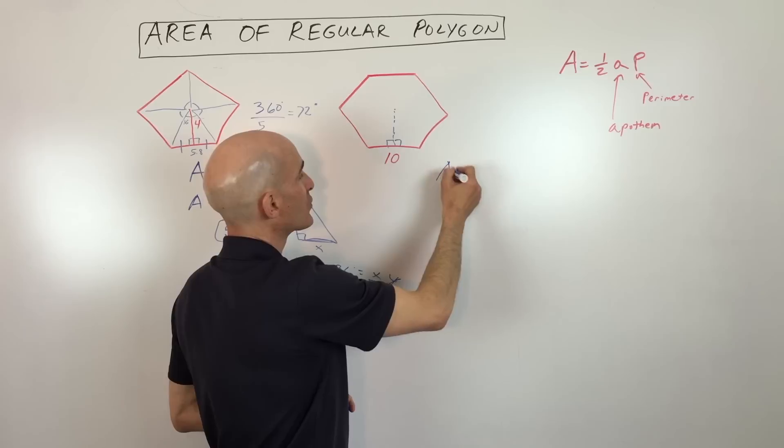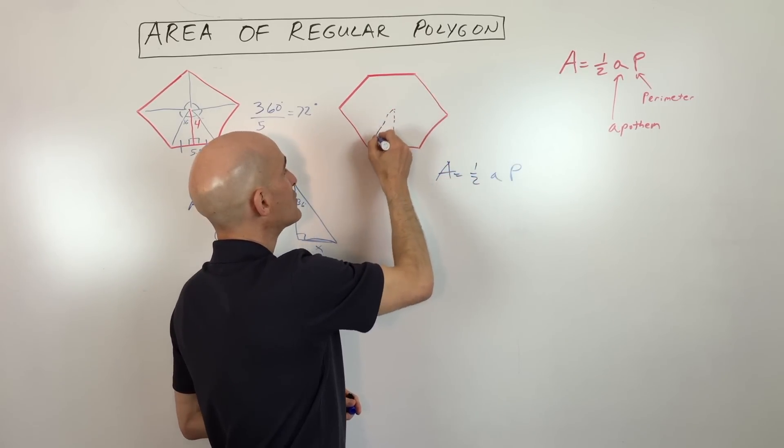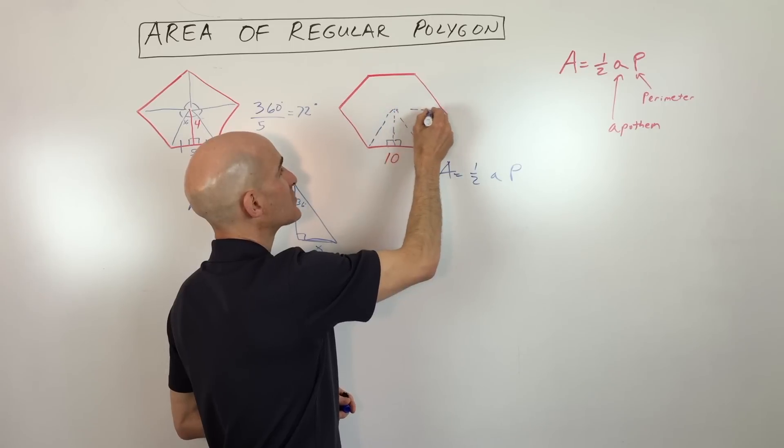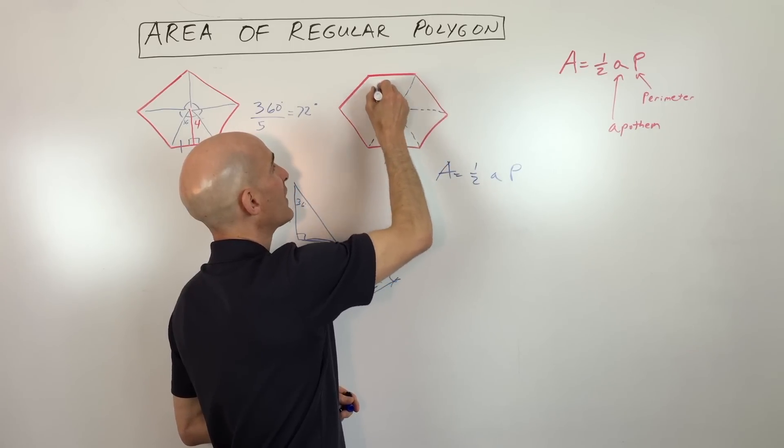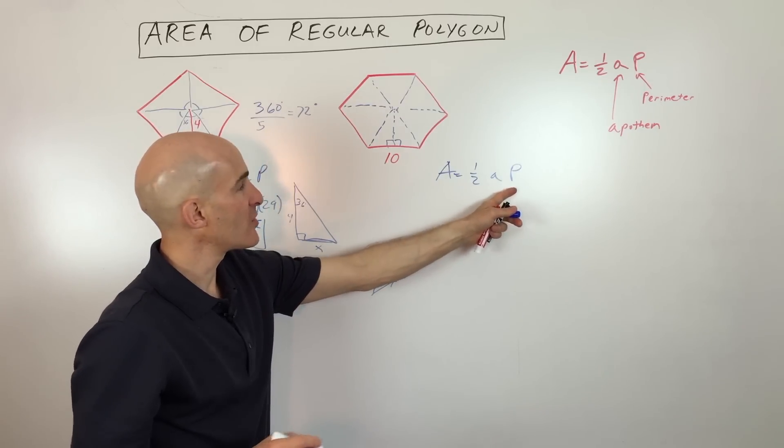And the way we're going to do that is we're going to divide this up into triangles, just like we did the last one. So we're going to divide it up, like so. And what we need to do is we need to find the perimeter. So let's find the perimeter first.